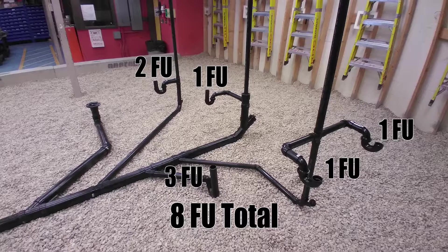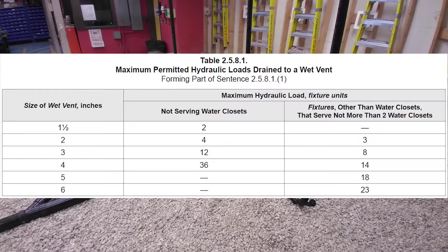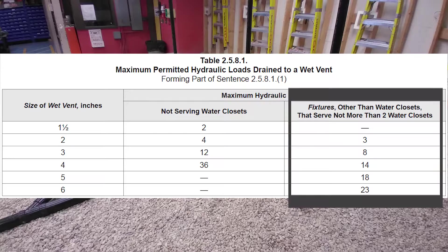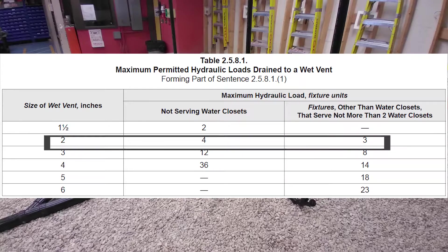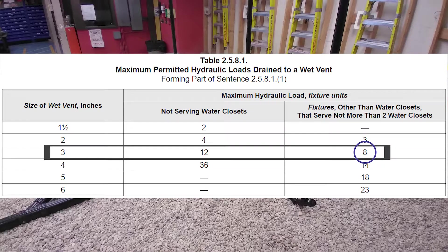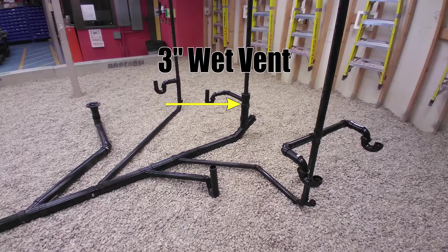It's important to note that we never count the last connected fixture when sizing up the wet vent — it's not actually draining into the wet vent so we don't count its fixture unit load. With a fixture unit load of eight, I look at table 2581 to size the wet vent. I need the right-hand column because I am serving a water closet. Two inches is only good to three fixture units; at three inch I can do eight fixture units, so that will be the size of my wet vent. The wet vent never changes in size, so it's three inch from the lav trap arm all the way down to the water closet trap arm.